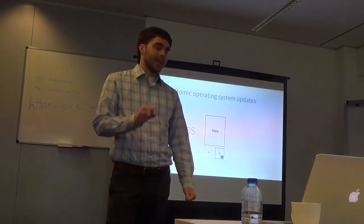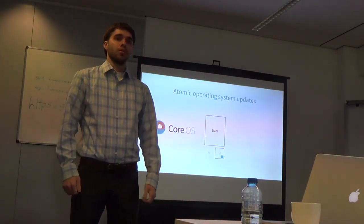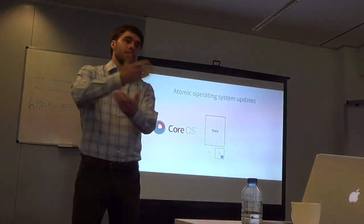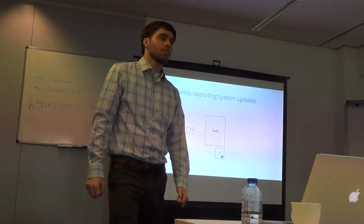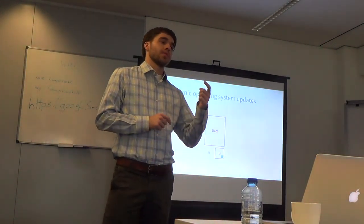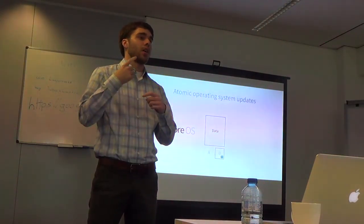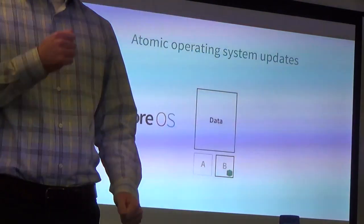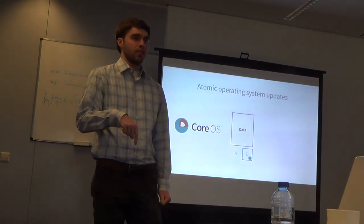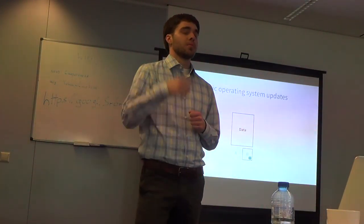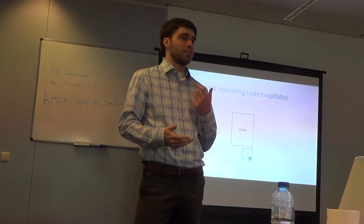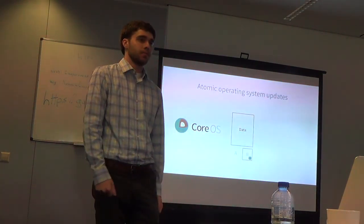CoreOS already does this on about 99% of platforms automatically — it'll do several checks during boot to make sure everything is going well, and if not, it just pivots back. We use Chrome OS's Omaha protocol, which specifies which version you're on and what your machine supports. The update engine is the actual client on the OS that does the update and communicates via Omaha. We also use the Chrome OS tools for managing dependencies during the OS build process.